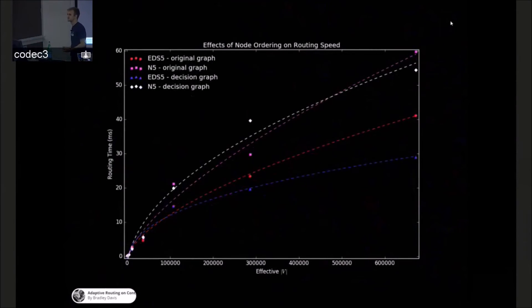There are obvious trade-offs, and I wanted to see how bad they are. So this is a graph of the effects of node ordering on routing speed. Again, the red and the blue lines with EDS-5 perform much better. But N5's routing speeds are roughly double at a graph size that's very large. And frankly, if you were doing this in a metropolitan area, the difference is quite negligible. And I think it's a fair trade-off for being able to update the edge weights every 15 seconds.